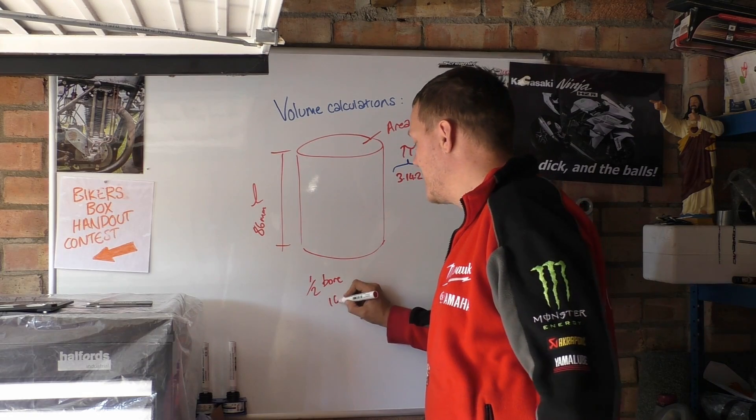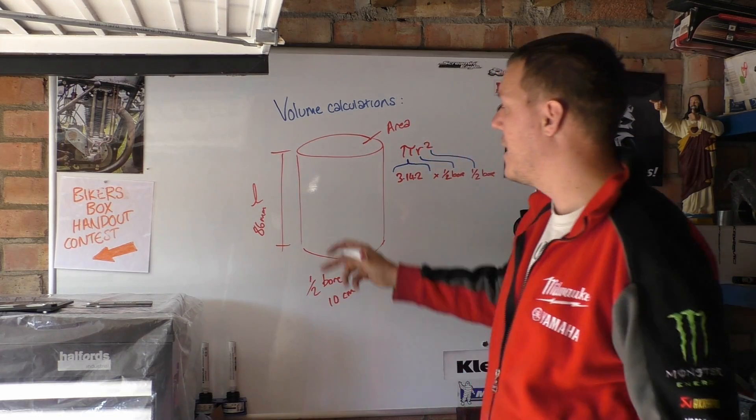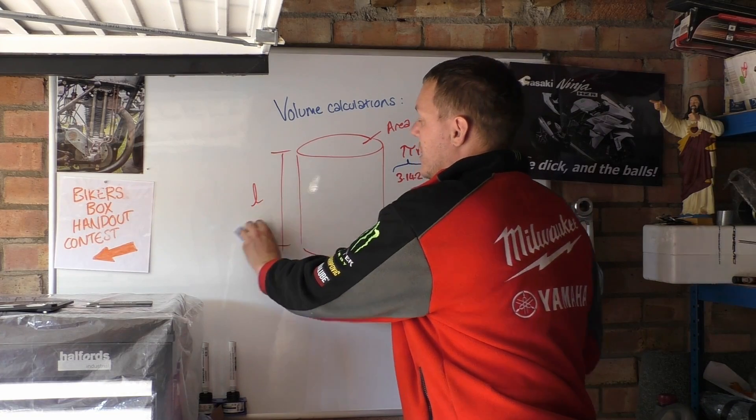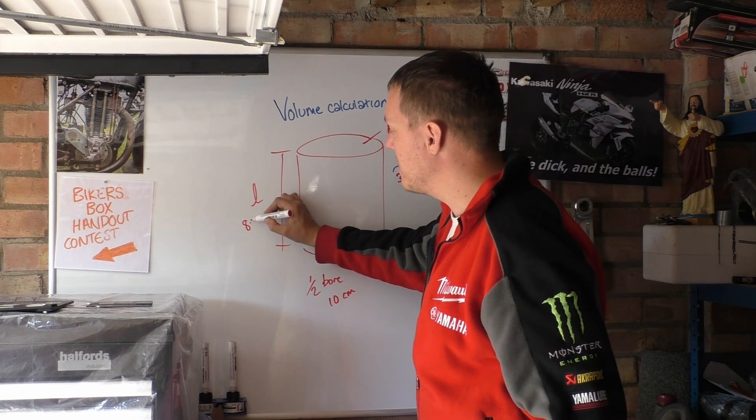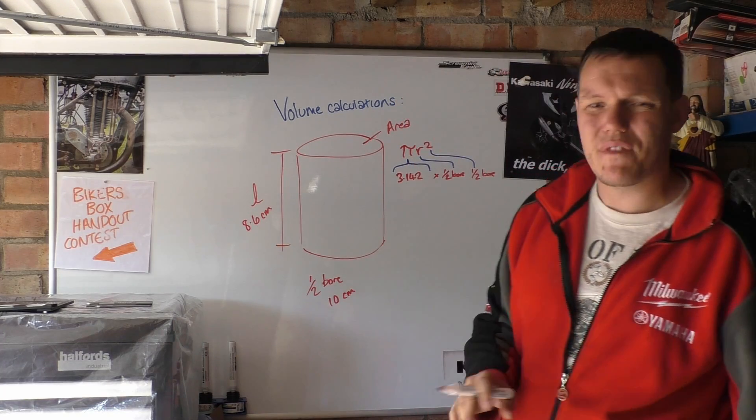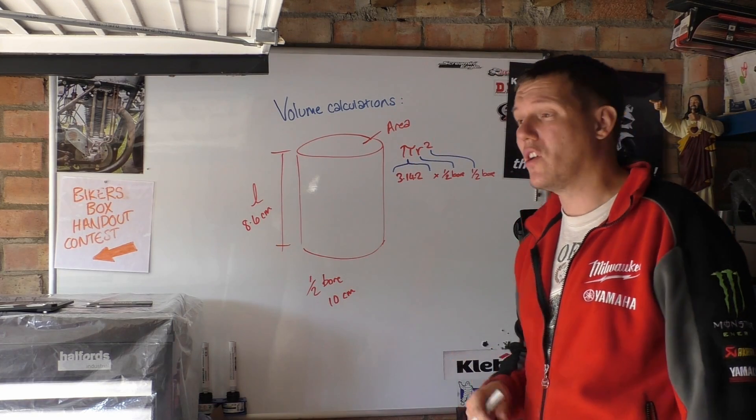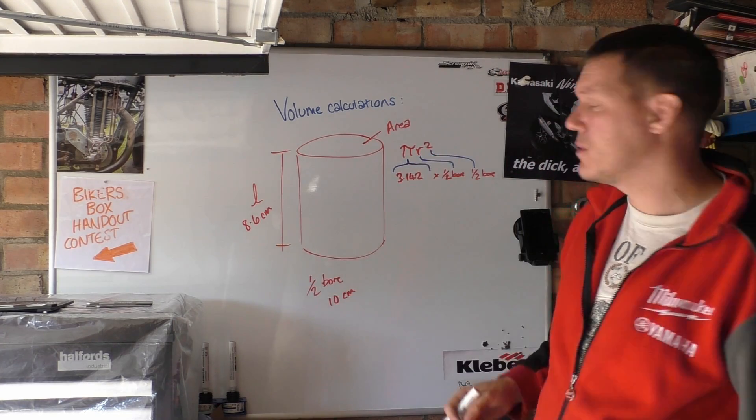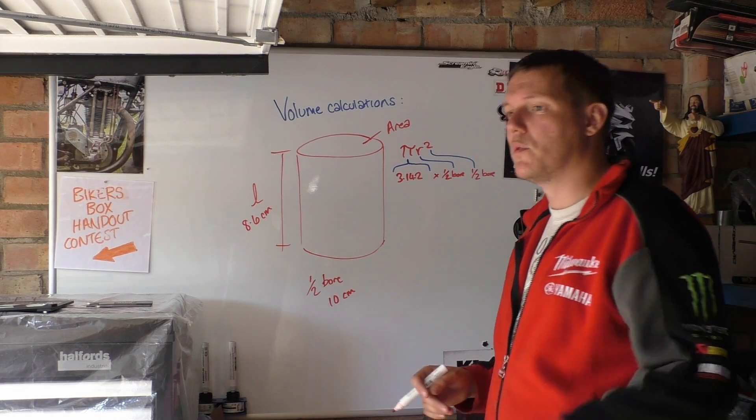So you do 10 centimeters, that's what I'd call it, and then you just do 8.6 centimeters. This just makes everything easier right from the get go. It's not hard, decimal place one over, one order of magnitude up.